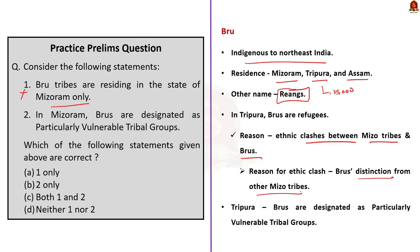Mizoram tribes believe Brus are not indigenous inhabitants of Mizoram and are ethnically distinct from the majority Mizo tribes, which is why they wanted Brus out of Mizoram. Ethnic clashes forced many Brus to migrate to neighboring Tripura in 1997. The second statement says Brus are designated as PVTGs in Mizoram — this is also incorrect. Brus are designated as PVTG in the state of Tripura, not in Mizoram. The correct answer is option D. The Bru-Reang agreement was signed on January 17, 2020 between the Government of India and the governments of Tripura and Mizoram, and provided voting rights to Brus in Tripura.